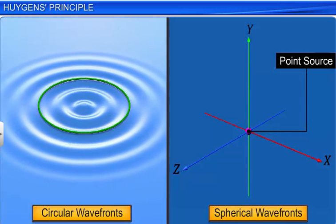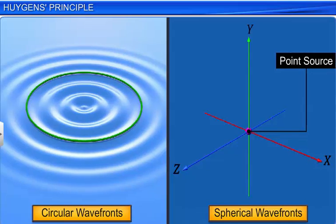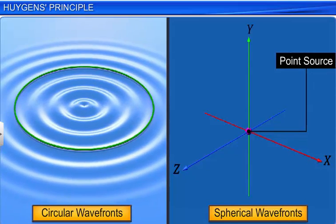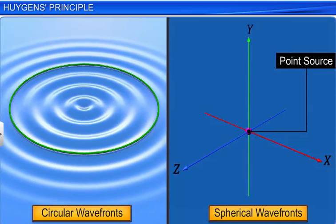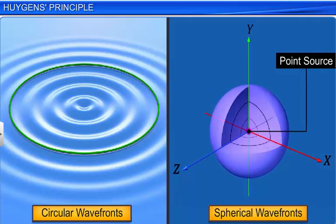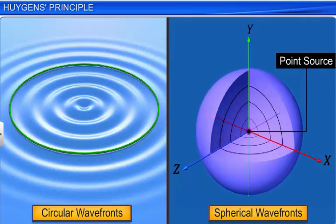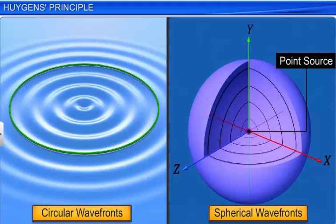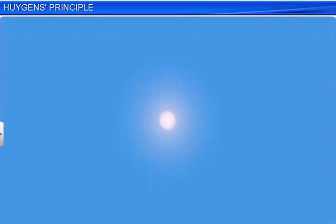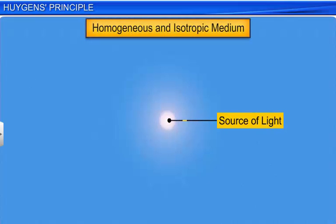Waves on the surface of water are two-dimensional, and hence the wave fronts are circular in shape. But the waves from a source of sound or a source of light in a homogeneous medium spread in all directions and are three-dimensional in nature. Now consider a point source of light placed in a homogeneous and isotropic medium, emitting light waves in different directions.